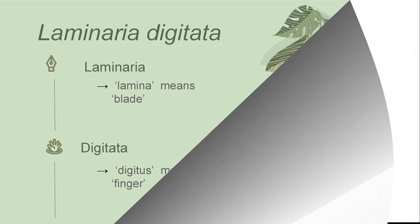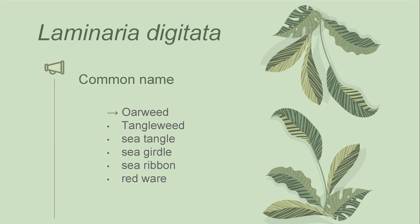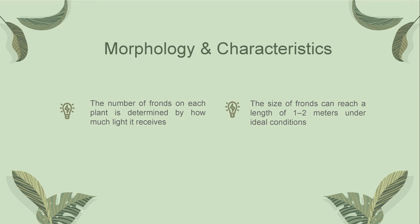This is a picture of Laminaria digitata and its parts: the blade, stipe, and holdfast. The species' most common name is oarweed, but it is also called tangleweed, sea tangle, sea girdle, sea ribbon, and red ware. Laminaria digitata is a perennial crop and lives for 4 to 6 years, although in some cases plants can live for up to 10 years. It is commonly found at low water during springtime on rocky shores. This species lacks a midrib, and it has a flexible and smooth stipe that is free of epiphytes except for Palmaria palmata and older kelps. When fully developed, the digitated fronds of this seaweed have 3 to 8 finger-like segments. Each frond is grooved, leathery, and digitated. The number of fronds on each plant is determined by how much light it receives. The size of the fronds varies depending on the season and the place where they are grown, but they can reach a length of 1 to 2 meters under ideal conditions.